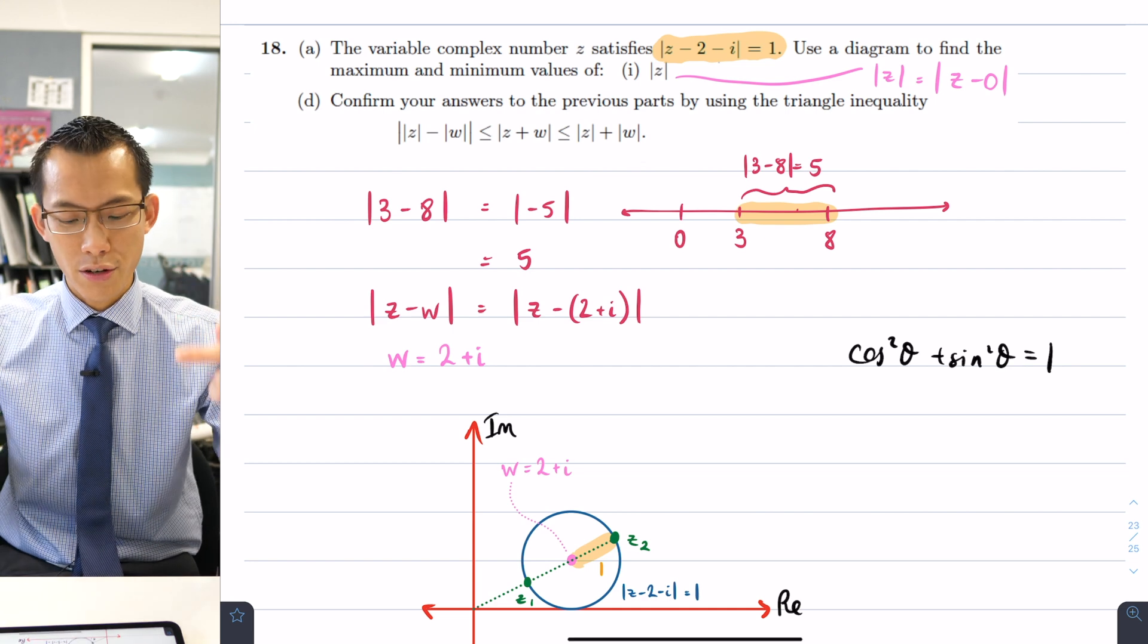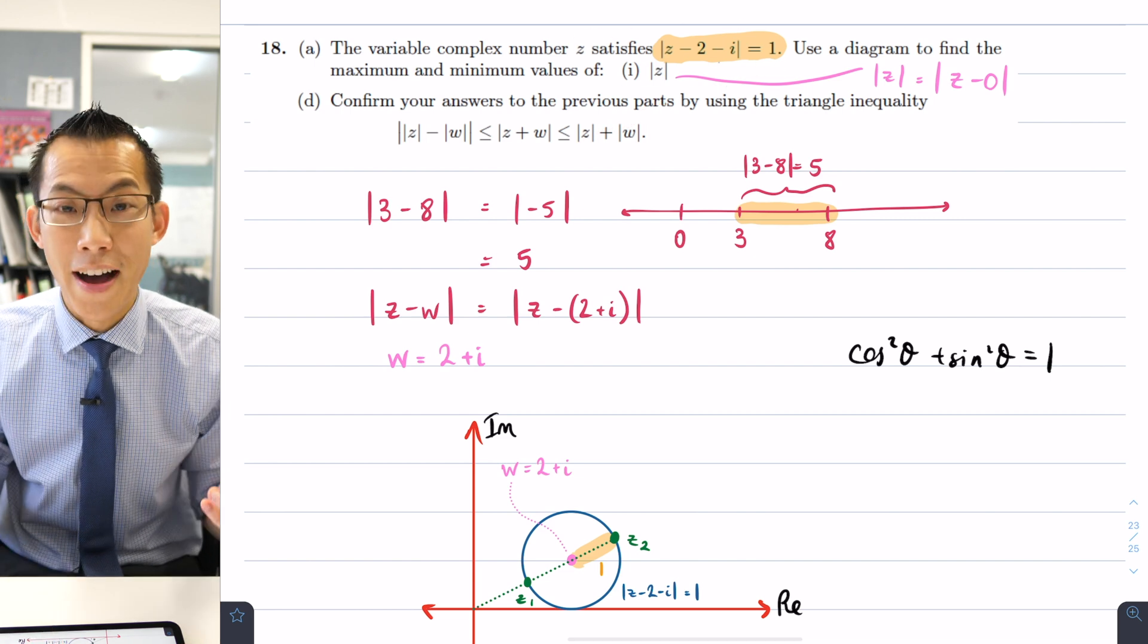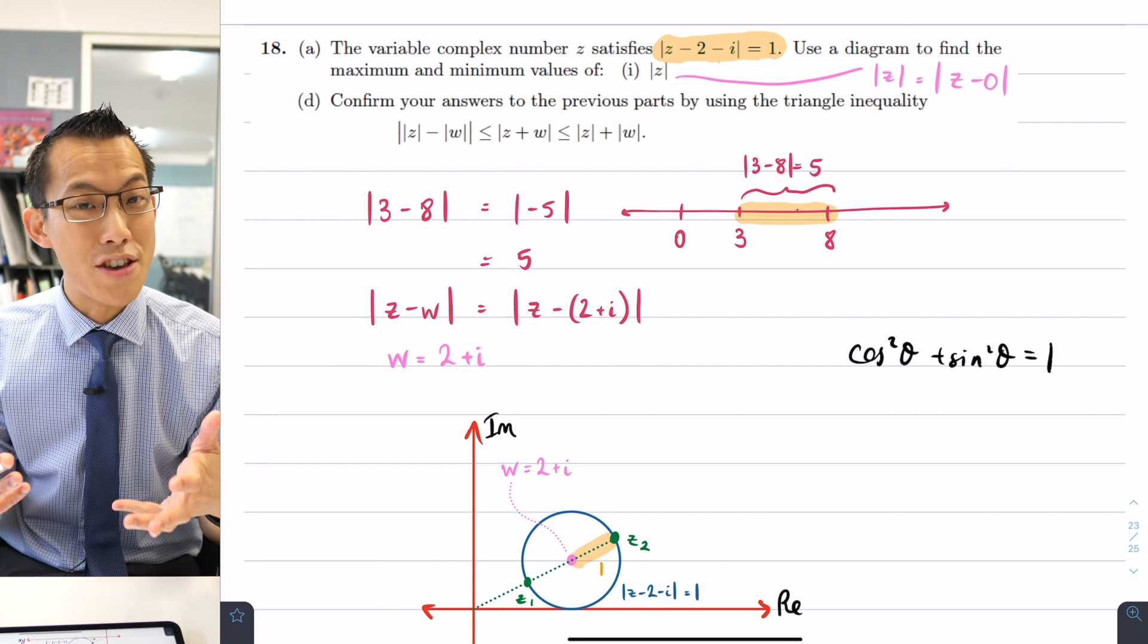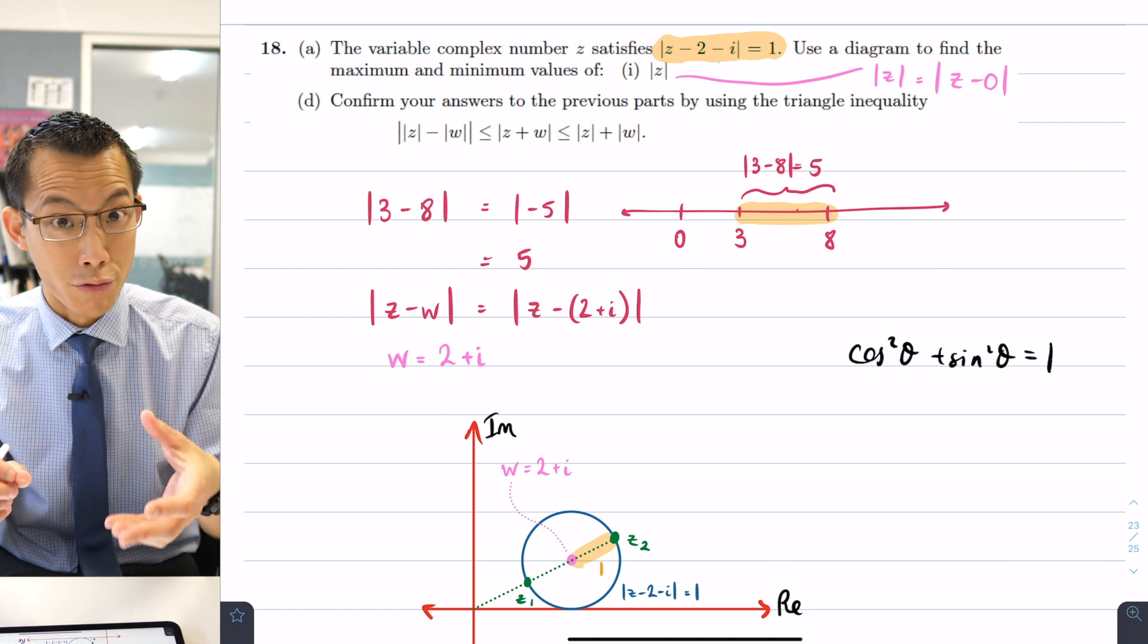Cos squared plus sine squared equals 1. This comes from a right-angled triangle, particularly a right-angled triangle in the unit circle whose x-coordinate is cos, its y-coordinate is sine, and the radius of that circle is 1. So this comes from geometric reasoning, but once you establish that, you don't have to do any diagrams or geometric reasoning to use this in a trigonometric identity proof. You can just say, anytime I see cos squared plus sine squared, I can just say that's 1. I can just substitute it.